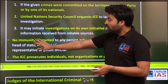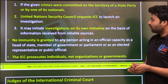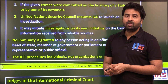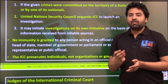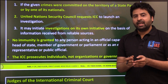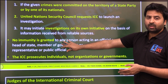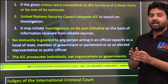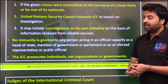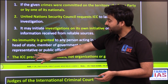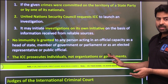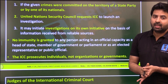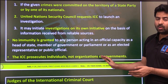Two important points: first, no immunity is granted to any person acting in an official capacity — whether a head of state, member of government or parliament, elected representative, or public official. Unlike many national constitutions where presidents enjoy immunity for official acts, the ICC provides no such immunity, which is why it issued an arrest warrant against the president of a country not even a member of the ICC. Second, the ICC prosecutes individuals, not organizations or governments as a whole.